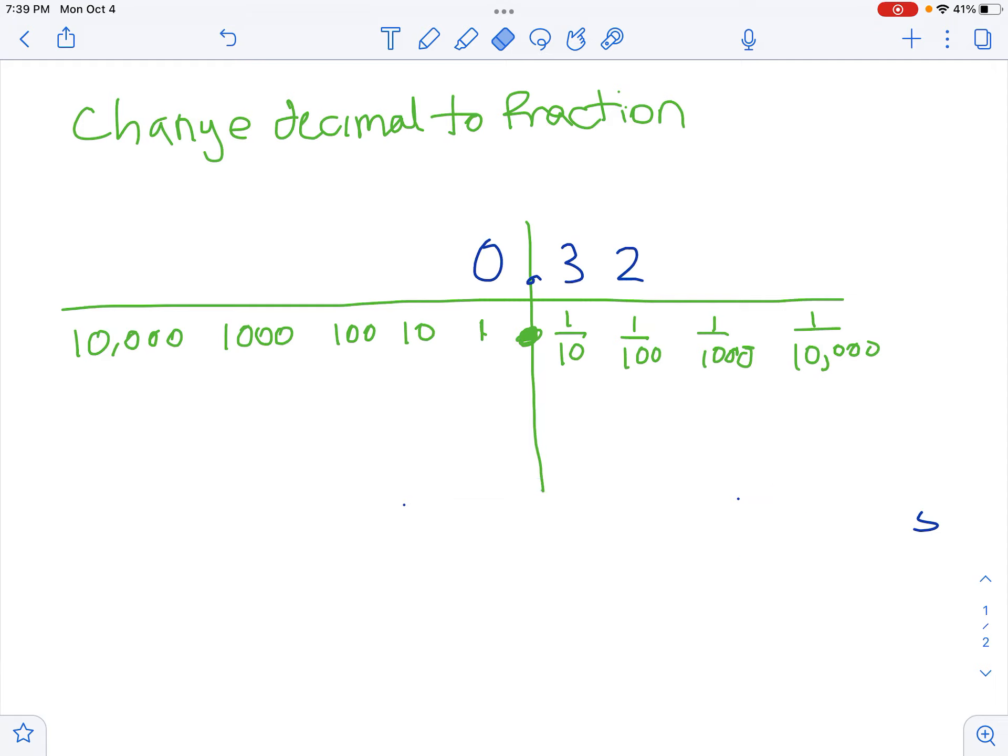You might want to sort of set up a place value system, but you do have to remember tenths, hundredths, thousandths, ten thousandths, hundred thousandths, millionths, ten millionths, hundred millionths, just the same way it goes on the left: tens, hundreds, thousands, ten thousands, hundred thousands, millions, ten millions, etc.